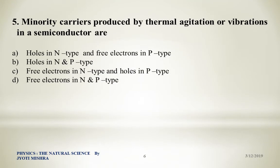Question five: Minority carriers produced by thermal agitation or vibrations in semiconductors are — Option A: holes in N-type and free electrons in P-type. Option B: holes in both N-type and P-type. Option C: free electrons in N-type and holes in P-type. Option D: free electrons in both N-type and P-type. From the previous question on majority carriers, the minority carriers are holes in N-type and free electrons in P-type — Option A.